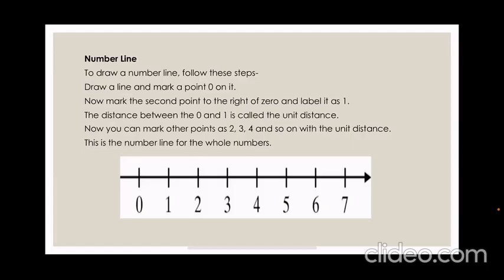Now you can mark other points as 2, 3, 4 and so on with the unit distance. That means with the same distance. And the picture represents an example of a number line.